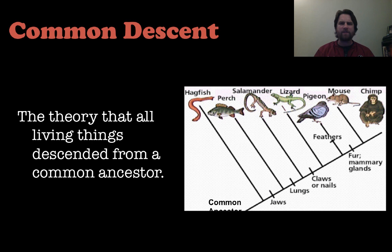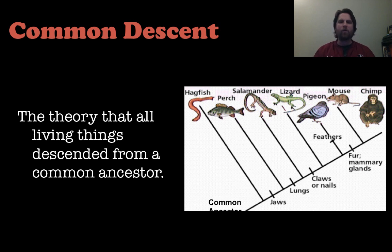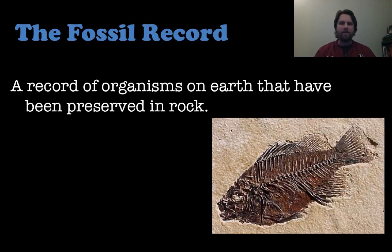So first let's talk about common descent. What does that mean? That is the theory that all living things descended from a common ancestor, and we only can theorize this because we have seen some evidence to show that.